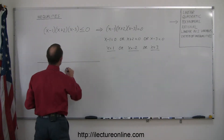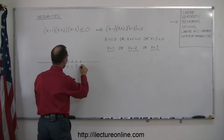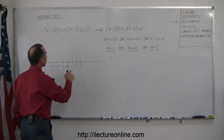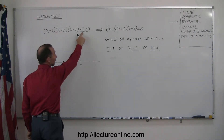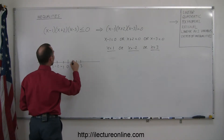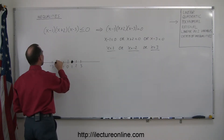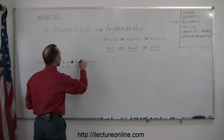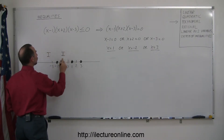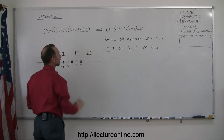We're going to write those numbers on the number line, marking 0, 1, 2, 3 and negative 1, negative 2, negative 3. Since the inequality has an equal sign (less than or equal to), the critical points are included in the solution, so we draw a solid circle at x equals 1, a solid circle at x equals negative 2, and a solid circle at x equals 3. Those critical points delineate four regions: Region 1 to the left of negative 2, Region 2 between negative 2 and 1, Region 3 between 1 and 3, and Region 4 to the right of 3.